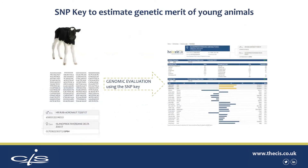Using this SNP key we can estimate the genetic merit of young animals. So if we have a young calf and it's genotyped and you have some pedigree information, the genomic evaluation can be calculated using the SNP key, and you'll see a typical genomic evaluation result on the right hand side of the screen.